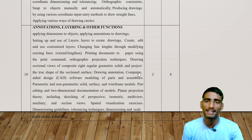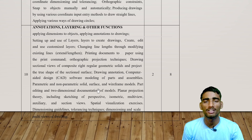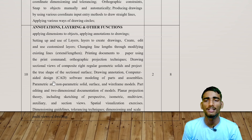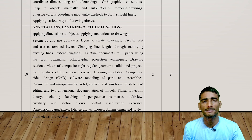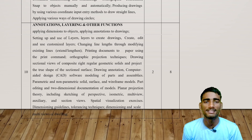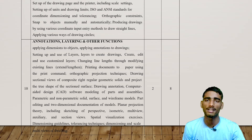The tenth topic is Computer-Aided Design software modeling of parts and assemblies: parametric and non-parametric solid surface modeling. You will do drawings related to both types. You will be guided in the lab as well. Also covered are auxiliary section views, spatial visualization exercises, and dimensional guidelines.